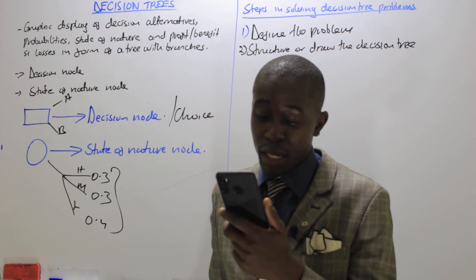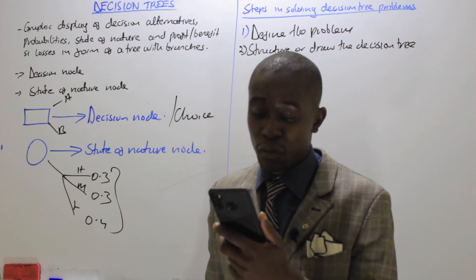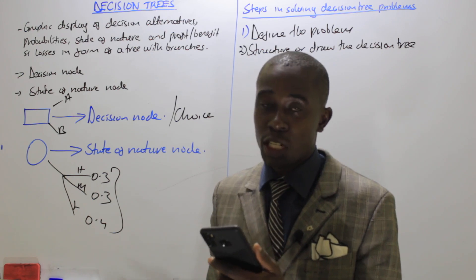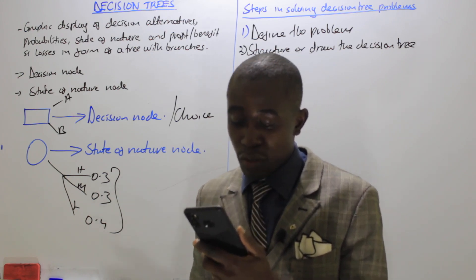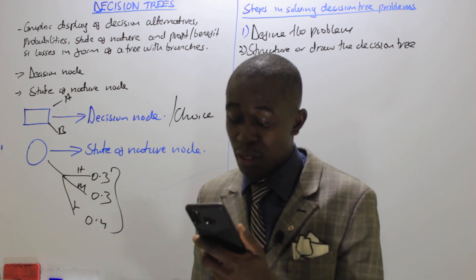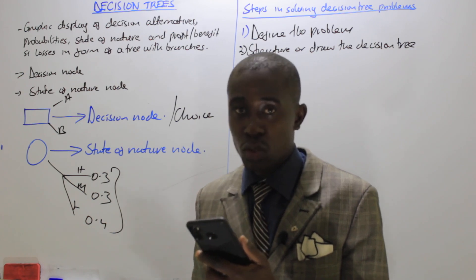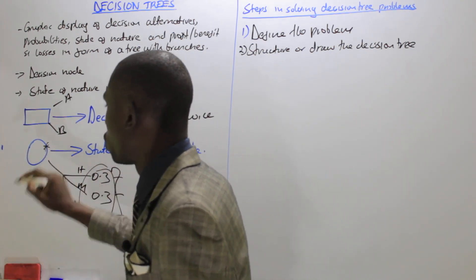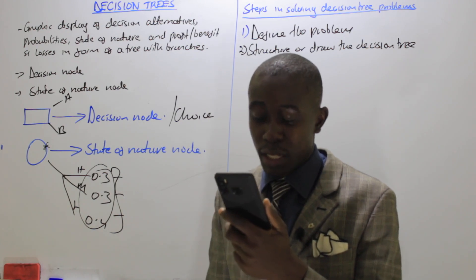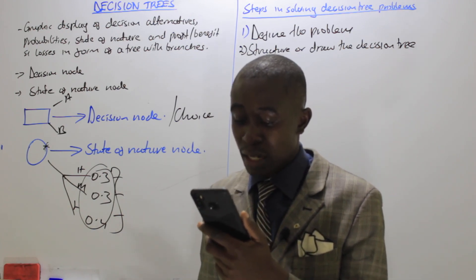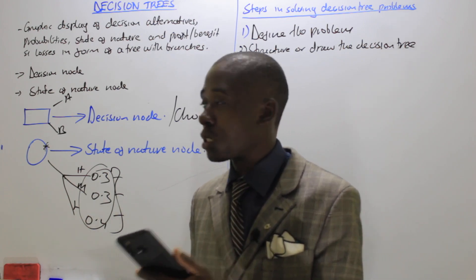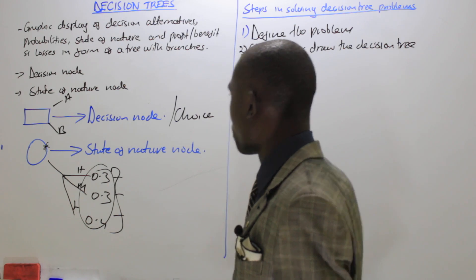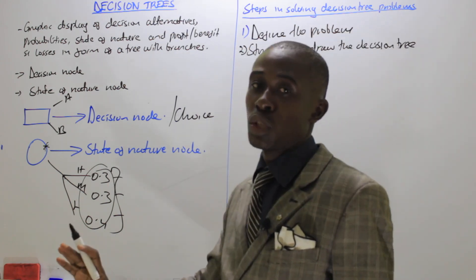Number four, estimate payoffs for each possible combination of alternatives and states of nature. Then number five, which is the last step: solve the problem by computing the expected monetary value for each state of nature node. This means multiplying returns by probabilities. This is done by working backward — starting at the right of the tree and working back to the decision nodes on the left. This method of working from right to left is known as the rollback approach.